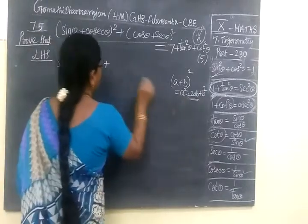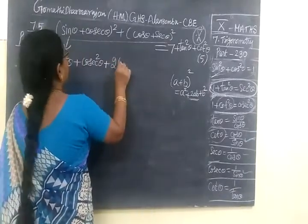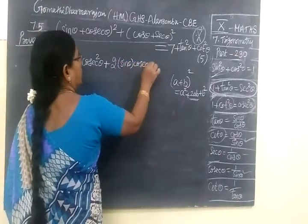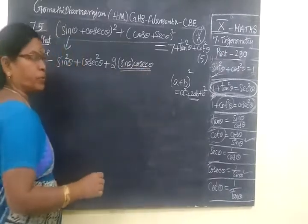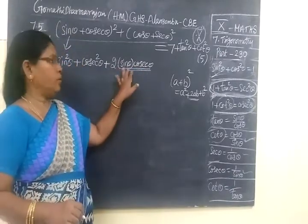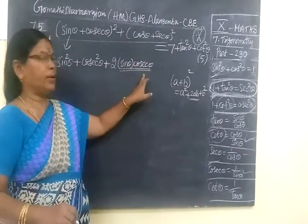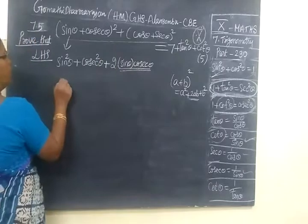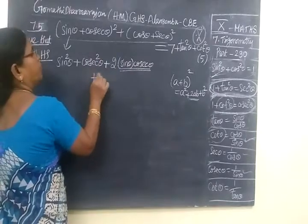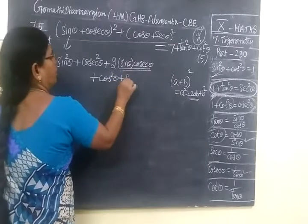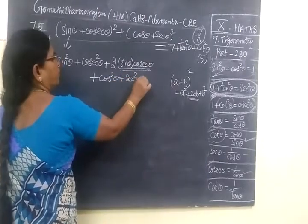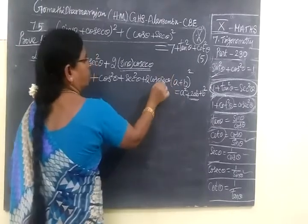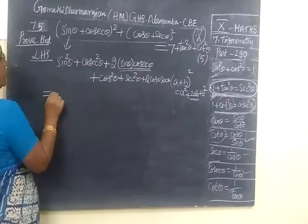2AB - 2 into A is sine theta, then cosecant theta which is 1 by sine theta. So this will cancel out over 2. Similarly for the next term you can write plus cos square theta plus secant square theta plus 2 cos theta secant theta. This will be getting cancelled.